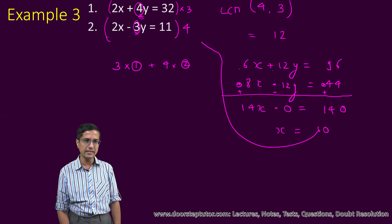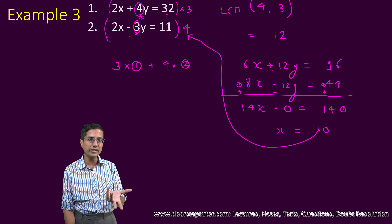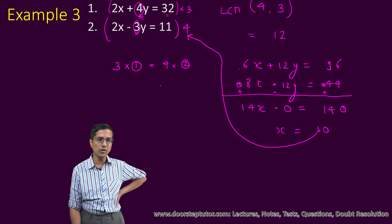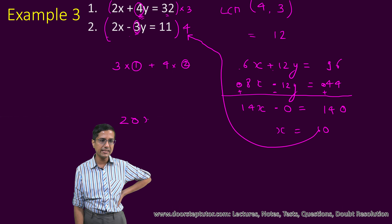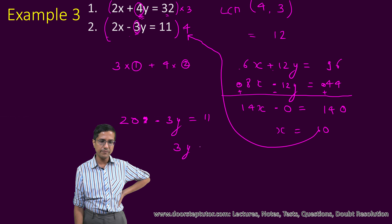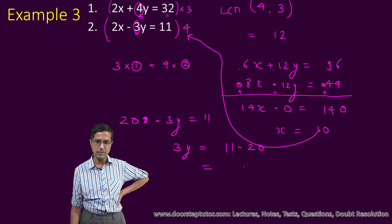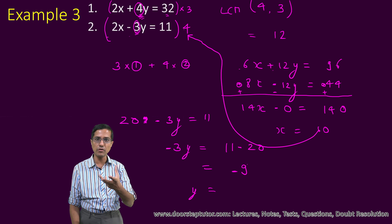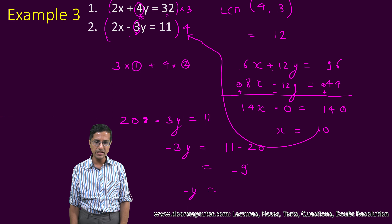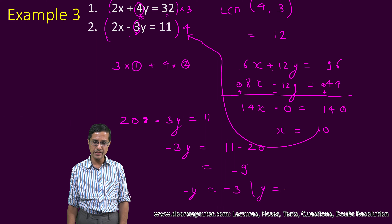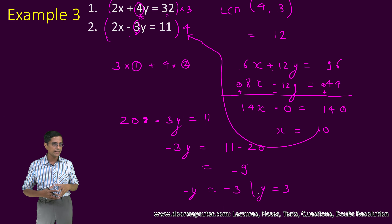Now we substitute x equals 10 in the simpler equation, which has smaller numbers. This becomes 20 minus 3y is equal to 11. So minus 3y is equal to 11 minus 20, which is minus 9 — and of course we should not forget the minus sign. Therefore minus y equals minus 3, or y is equal to 3. And hence we are able to solve the equations.